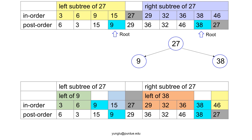The left subtree of 9 has 3 and 6. The right subtree of 9 has 15. Similarly, among the nodes in the right subtree of 27, node 38 appears last. Thus, 38 is the root of the right subtree of 27. From 38, we can go to the in-order traversal and divide into the left subtree of 38 and the right subtree of 38. The left subtree of 38 has 29, 32, 36.